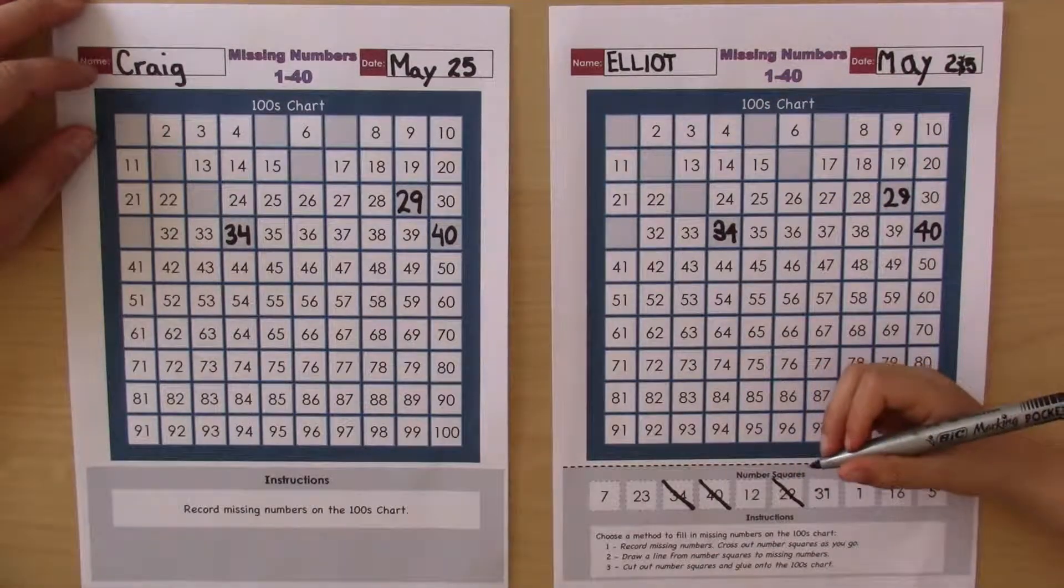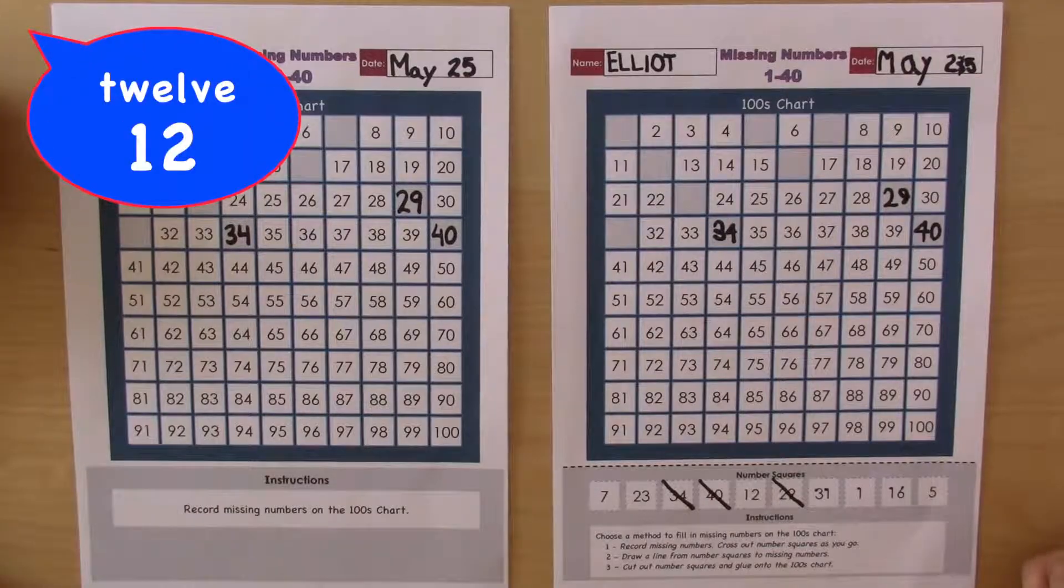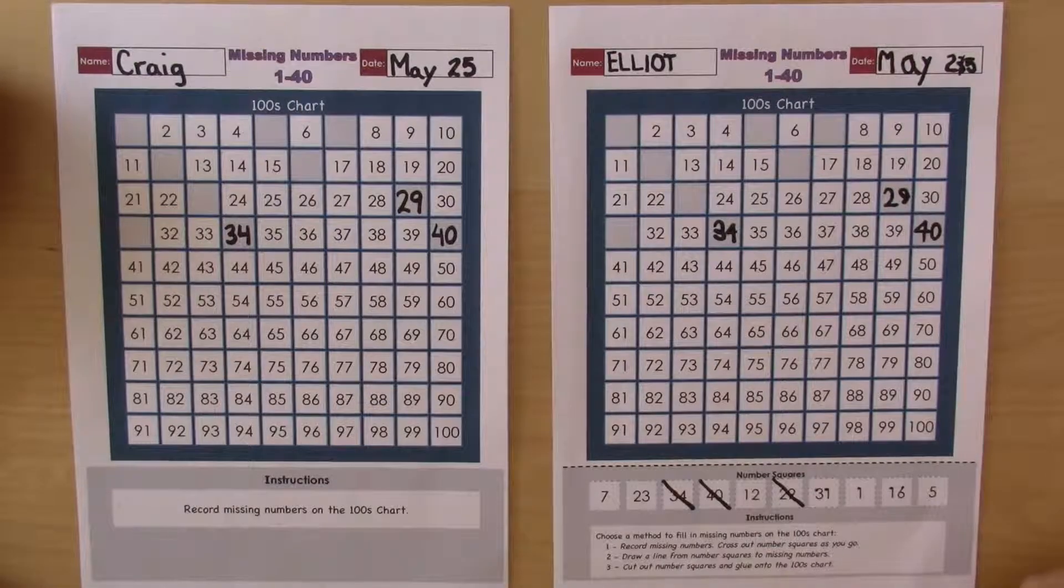Okay, which one's next? This one. And what's that called? Twelve. How do we say twelve in French? Trente.